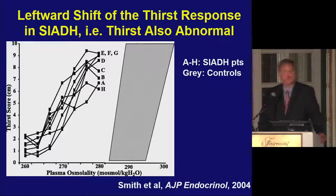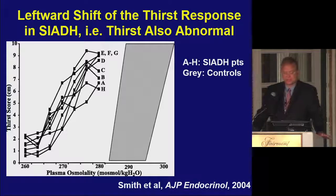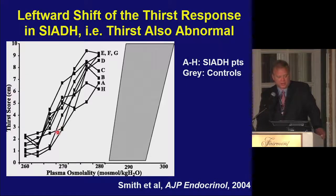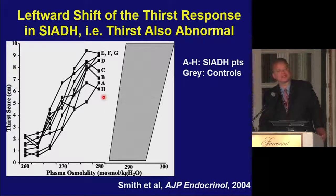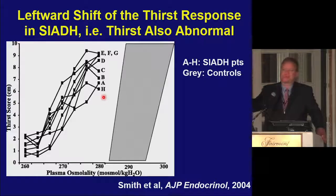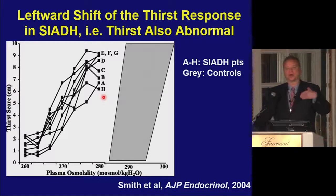This paper didn't get a lot of attention, but I think it's really critical. This was a study of several patients with SIADH, and when they looked at their thirst score in response to plasma osmolality, the normal thirst response was shifted to the left — just as vasopressin response is also shifted to the left in these patients. So in SIADH, thirst is also inappropriately activated at lower osmolalities along with vasopressin.